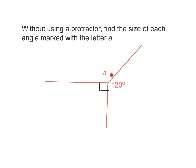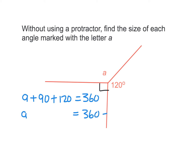Okay, final problem — solve for angle A. This one is just a little bit more complicated, but we can realize that this is actually a revolution, and therefore equals 360 degrees. So angle A, added to the angle of 90 degrees, added to 120 degrees, must equal 360. We write: A plus 90 plus 120 equals 360 degrees. Therefore A equals 360 minus 90 minus 120, and angle A is equal to 150 degrees. Alright, now you have the basics of how to find an unknown angle without using a protractor.